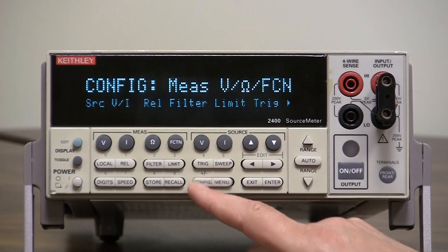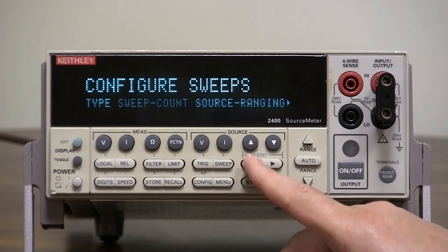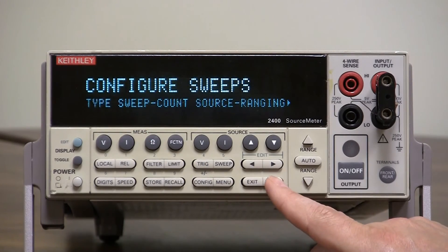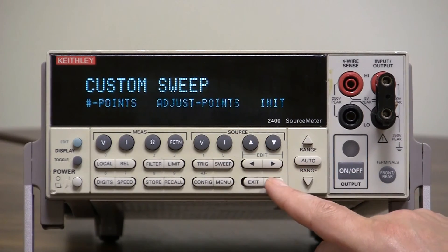Here's how you do that. You press the config button and you press the sweep button. You select type, press enter, select custom sweep, press enter.